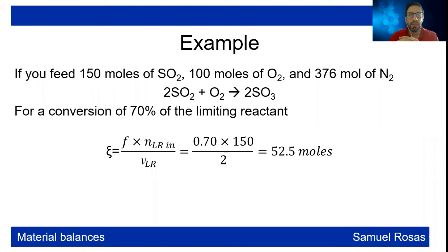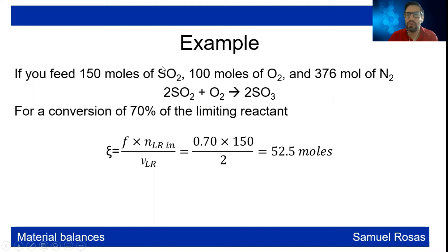As an example, we feed 150 moles of SO2, 100 moles of oxygen, and 376 moles of inert gas N2, with a conversion of 70% of the limiting reactant SO2 (see the previous video). The extent of reaction equals 0.70 times the inlet of the limiting reactant, 150, over the stoichiometric coefficient of 2, yielding 52.5 moles.